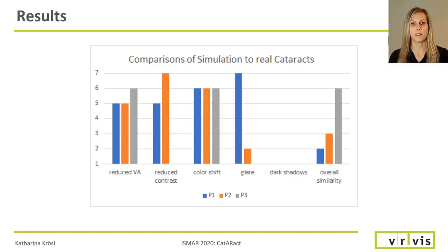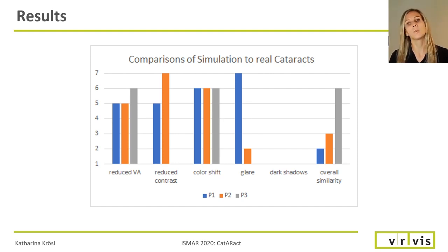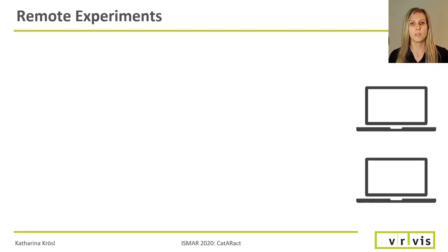Our preliminary results show that the individually adjusted symptoms were deemed to be close to our participants' perception of the environment with cataract vision in the majority of cases. However, the overall impression of our simulation was rated worse than the individual symptoms by two out of three participants. We have to run more experiments to look into this, but one explanation could be that each individual symptom was close but not perfect, so these little differences add up in the overall impression.